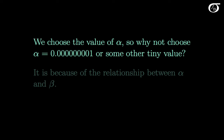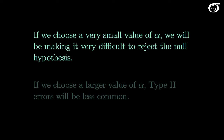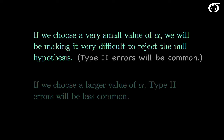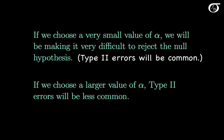Alpha is the probability of a type 1 error, given the null hypothesis is true, and we choose the value of alpha — so why not choose alpha to be some tiny value so we're not making a lot of type 1 errors? It is because of the relationship between alpha and beta. If we decrease alpha, then beta will increase. If we choose a very small value of alpha, we will be making it very difficult to reject the null hypothesis, and so type 2 errors will be very common. If we choose a larger value of alpha, it will become easier to reject the null hypothesis, and so type 2 errors will be less common.